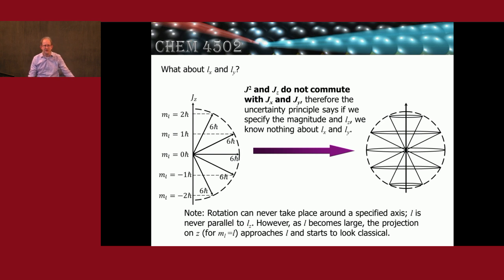Instead of thinking of it like this where we have a vector that points to one spot on the circle, we can think of it over here on the right where we have a vector that points to a spot on the circle. That spot then sweeps out a cone. We don't know the x component or the y component of this angular momentum.